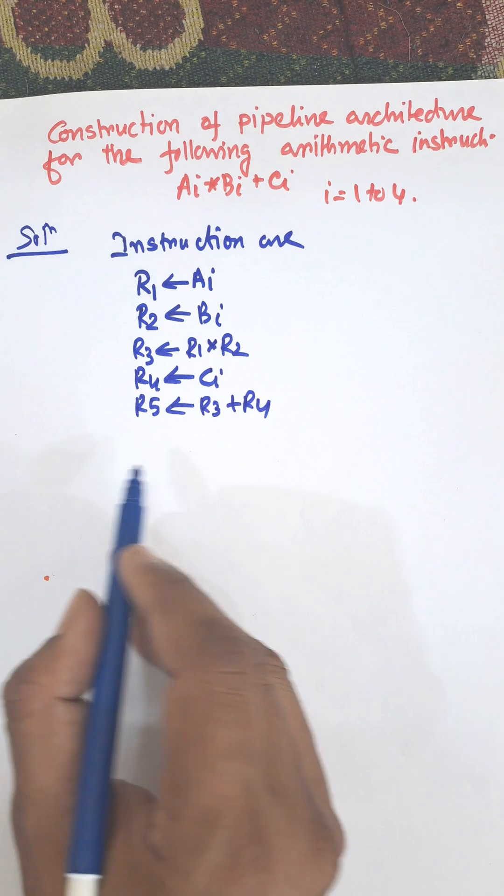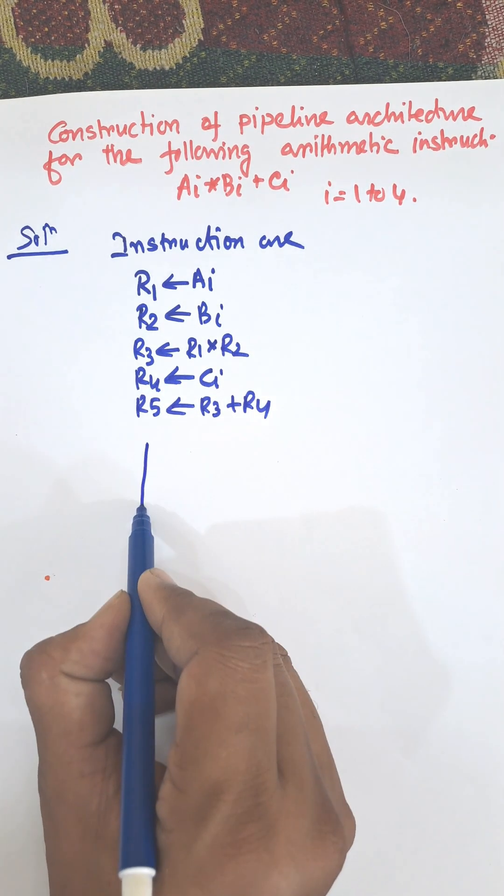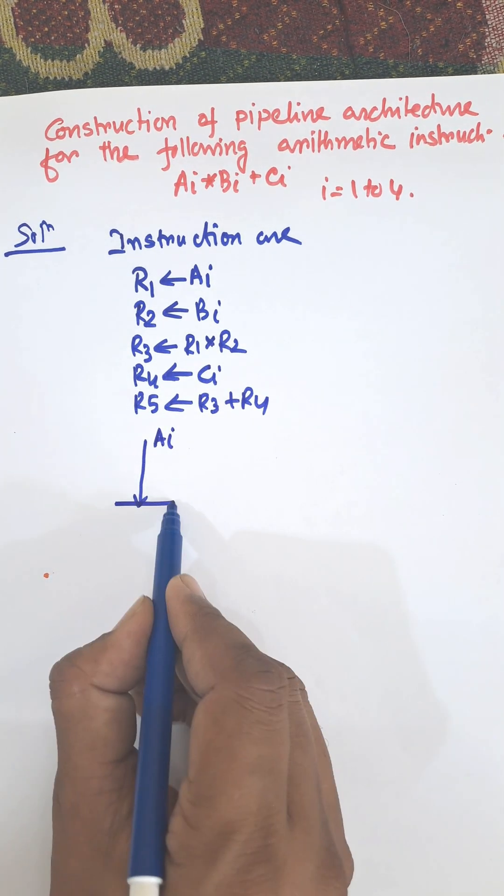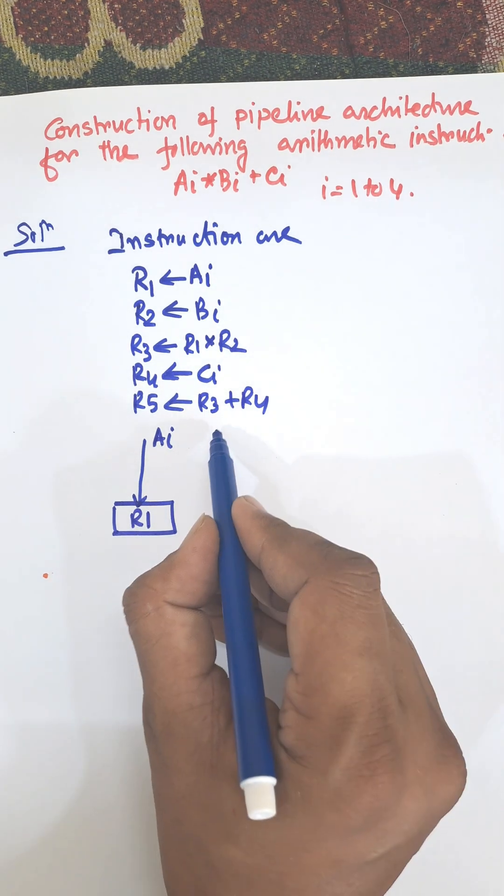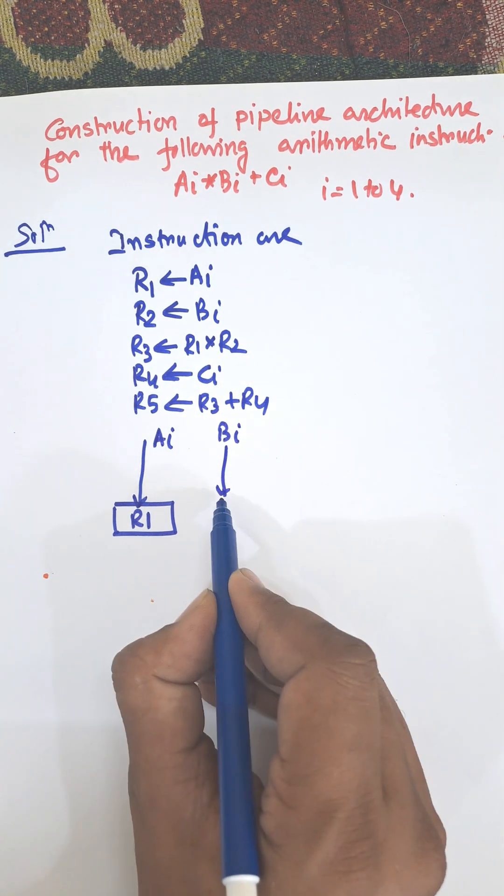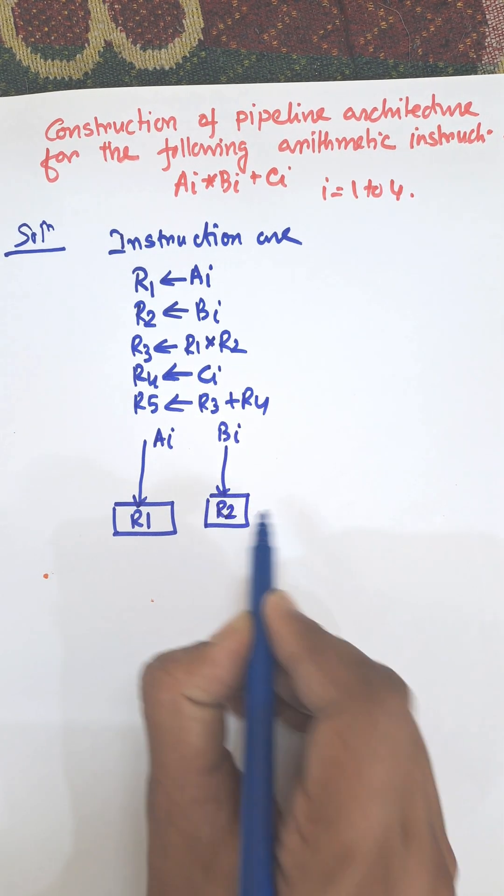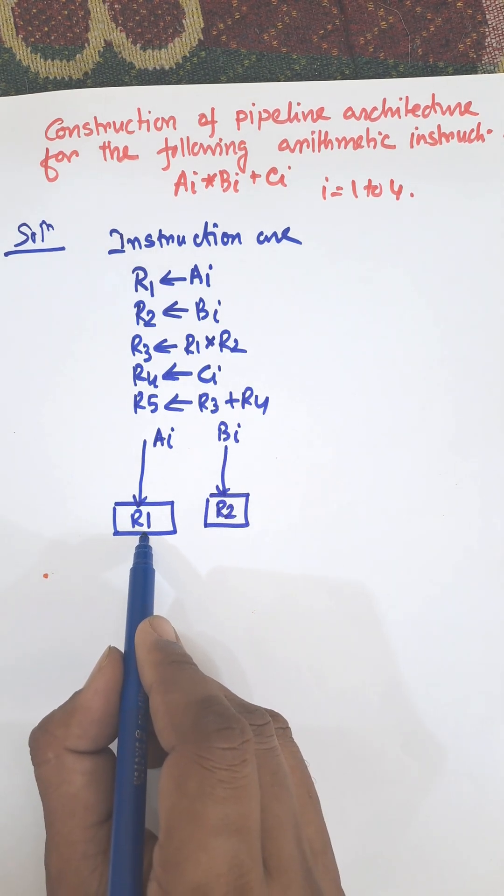Now we need to construct the pipeline architecture. First of all, we will insert ai to r1 register, then bi to r2 register, and then this operation is transferred to the multiplier unit.